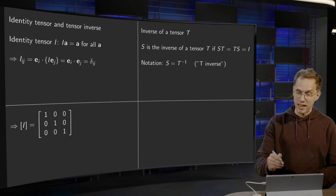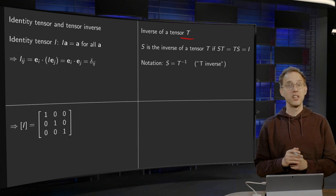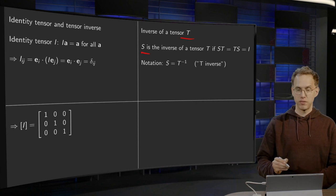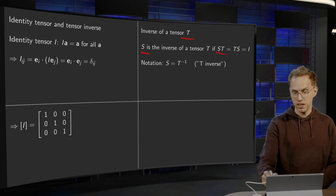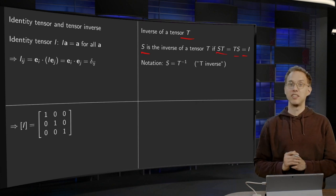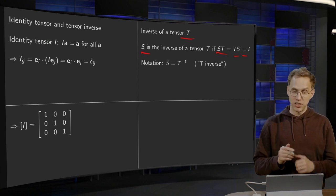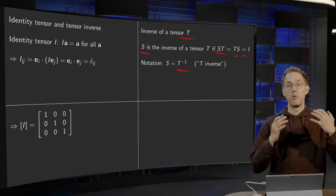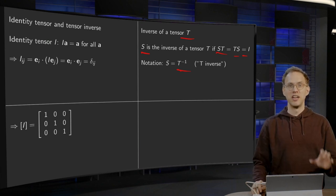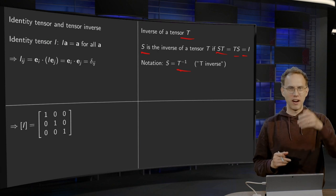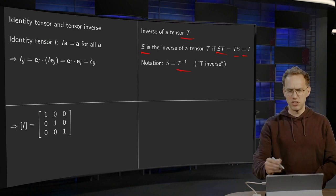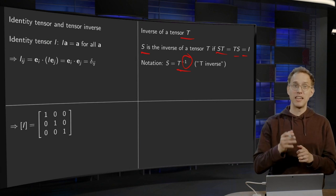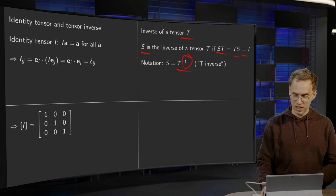Now, what about the inverse of a tensor T? Same idea as in linear algebra. S is the inverse of a tensor T if S times T equals T times S equals the identity tensor. The notation is S equals T to the power minus 1, which you pronounce as T inverse. That's the only tricky part. You cannot divide by matrices, so this notation is a bit deceptive. You always pronounce this as S equals T inverse - no divisions here.